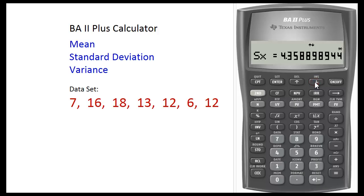Press the down arrow button again. Then we can see that the sample standard deviation is 4.3589. To obtain the sample variance, press the X squared button to square the standard deviation. The variance of this data set is 19.